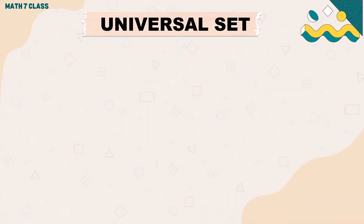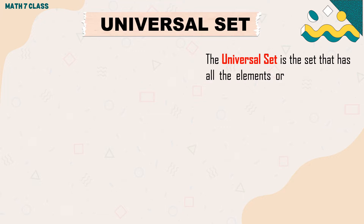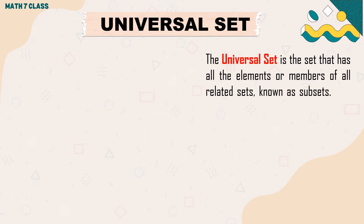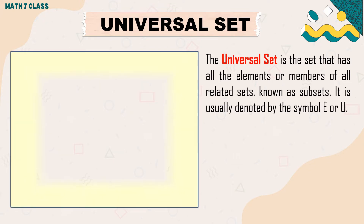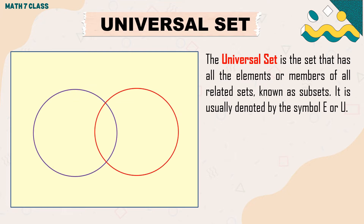What do you mean by universal set? The universal set is the set that has all the elements or members of all related sets, known as subsets. It is usually denoted by the symbol E or U. Let us consider this example in the Venn diagram, then give the elements of subsets A and B and also the universal set.